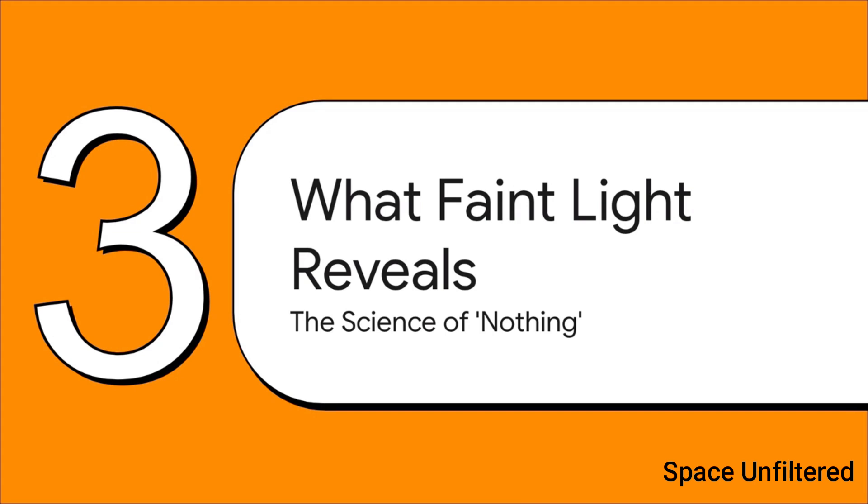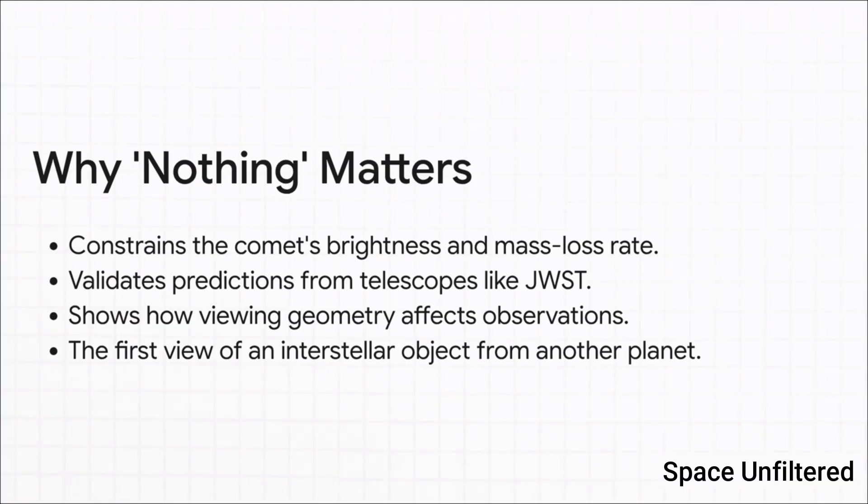But what's so fascinating is that what we didn't see is just as scientifically valuable. That faint little dot tells a profound story all on its own. This image gives scientists a crucial piece of data—it lets them put a hard limit on how bright the coma is and calculate how quickly the comet is losing material out into space. It helps confirm what other telescopes were predicting, and it's a perfect real-world lesson in how much our viewing angle matters in astronomy.